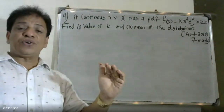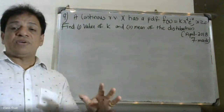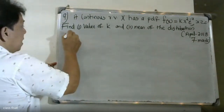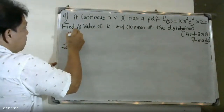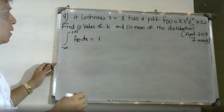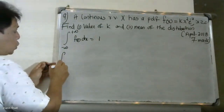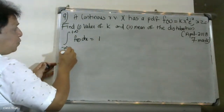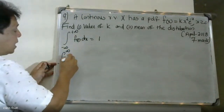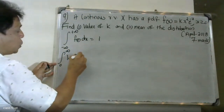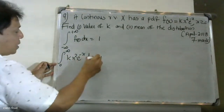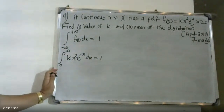Since f of x is a probability density function, it must satisfy the condition: integral from minus infinity to plus infinity of f of x dx equals 1. With lower limit 0 and upper limit infinity, this becomes: integral from 0 to infinity of k x squared e raised to minus x dx equals 1.